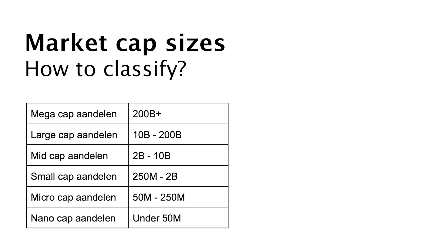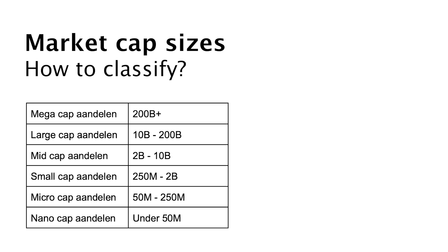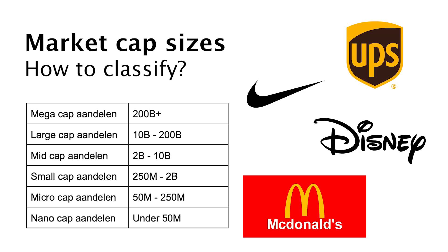How about the different sizes and categories? There are 6 market cap categories to classify a company. The first is mega cap, with a total market cap of more than $200 billion — companies like Apple, Microsoft, Amazon, and Alphabet. Often bought because of popularity, safety, or because they are proven businesses; most of the time these companies are slower growing. Next is large cap, with a market cap of $10 billion to $200 billion — examples include McDonald's, Walt Disney, Nike, and UPS.